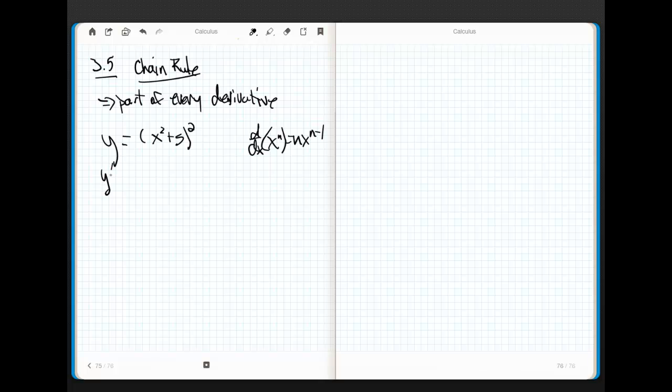So, our more fledgling mathematicians, calculisticians, whatever, might look at this and go, oh, well, this is easy, Ripley. This is a piece of cake. I simply go 2 times x squared plus 5 to the first, and I'm done.